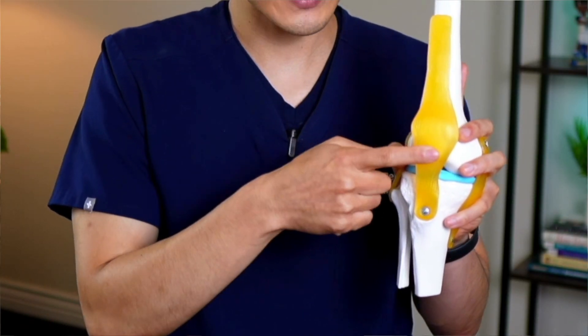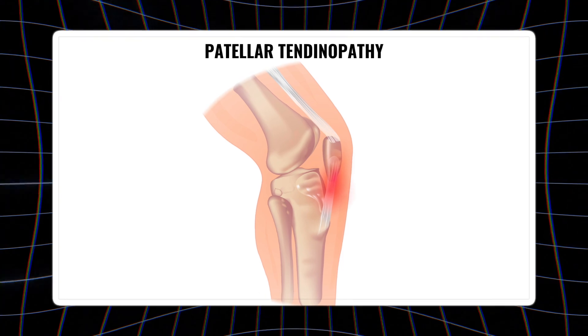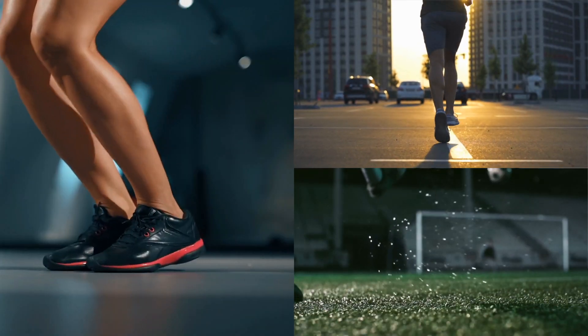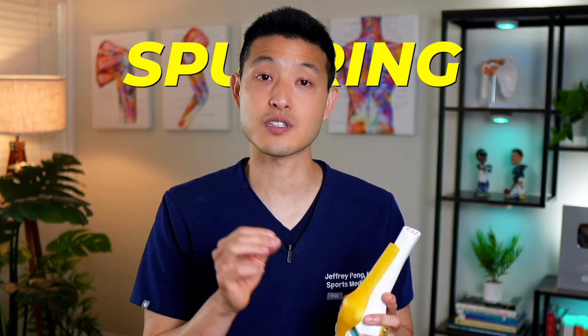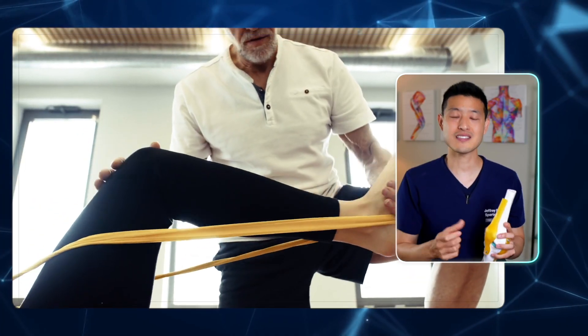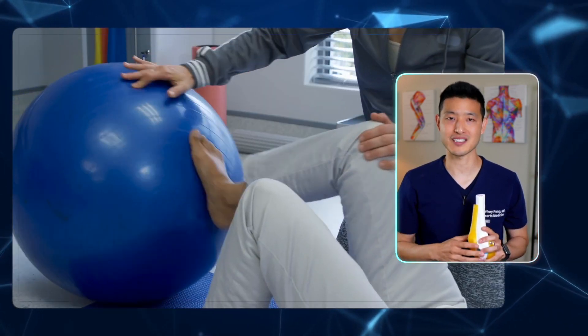Now let's move down below the kneecap. The quadriceps tendon goes over the patella and becomes the patellar tendon as it attaches down onto the tibial tuberosity. Pain along the distribution of the patellar tendon is usually due to something called patellar tendinopathy. The patellar tendon plays a vital role in transmitting the forces from the quadriceps muscle down to the lower leg during activities like jumping, running, and kicking — that's why this condition is often referred to as jumper's knee. Just like with quadriceps tendinopathy, mechanical stress of the patellar tendon can also lead to spurring and enthesophytes. This is also easily treated with exercise therapy and a rehabilitation program.